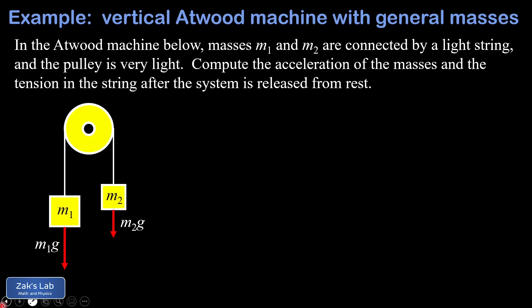The next thing we do is get the tension into the diagram. Again, the tension will be the same at each end of that string as long as it's a light string and the pulley is light as well. Notice what I did with the relative magnitude of the tension and those two weights.